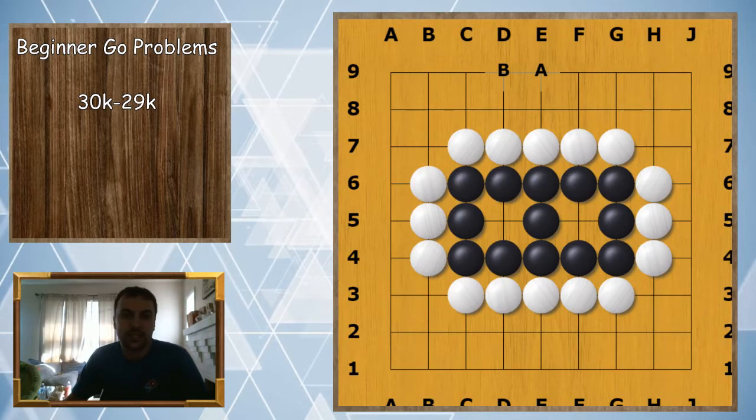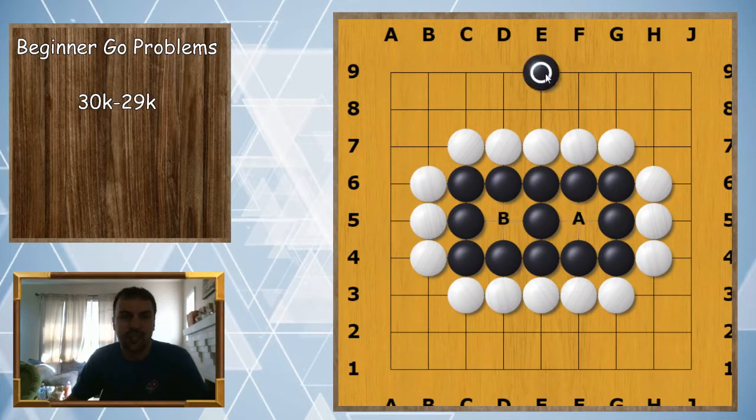Is this black group alive or dead? Does it have two eyes? A for yes, B for no. In this case it looks exactly like our last example, so we're going to say yes, it is alive with two eyes.